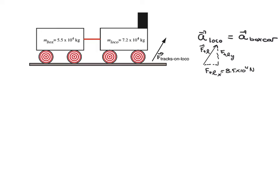To solve this problem, we're going to make use of Newton's second law. If we apply it first to the locomotive, we're going to make use of the fact that the acceleration of the locomotive is proportional to the net force on the locomotive divided by the mass of the locomotive. So we want to say something about the net force that acts on the locomotive, and that means we want to draw a free body diagram to identify the individual forces that act on the locomotive. Then we can sum those forces to give us the net force.